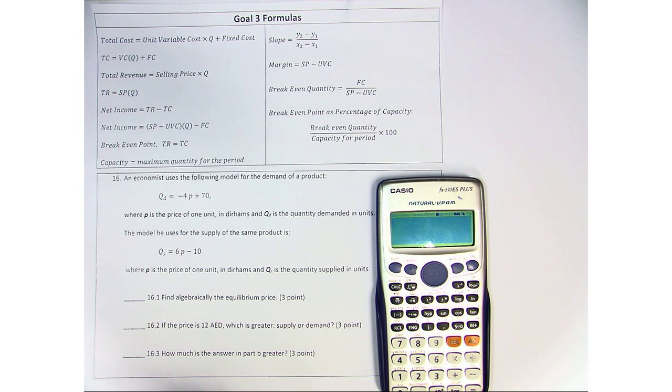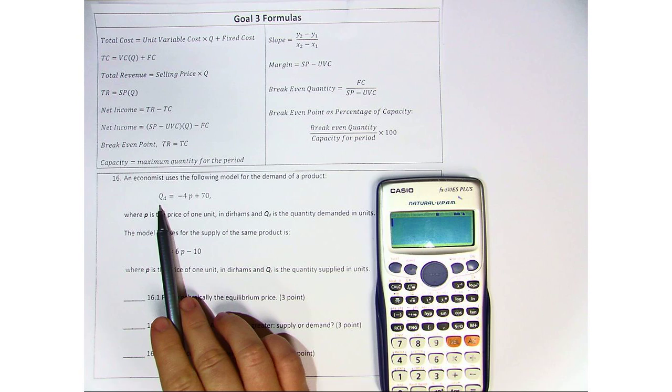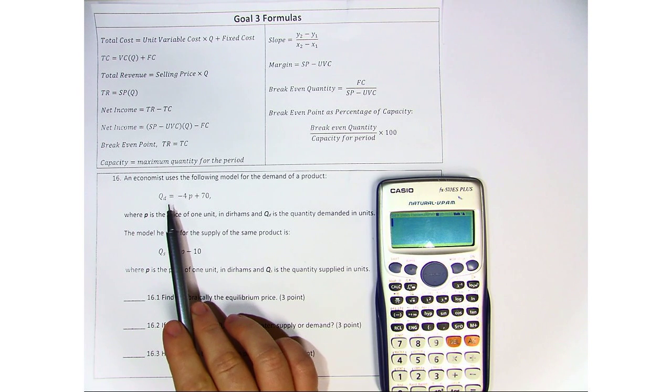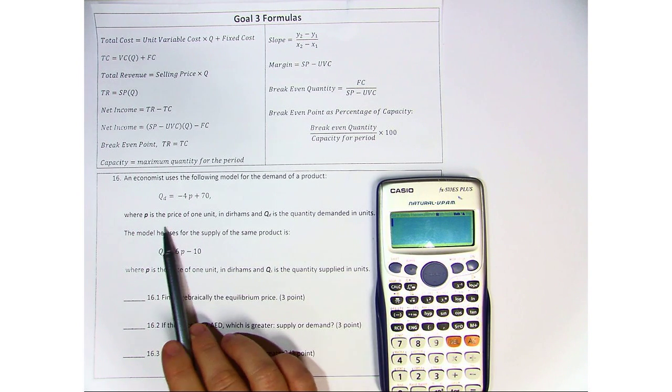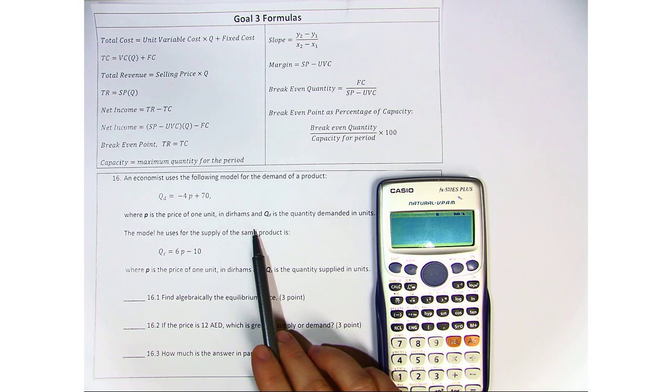From Section A of the revision, an economist uses the following model for the demand of a product. Qd, the quantity demanded, equals negative 4p plus 70, where p is the price of one unit in dirhams.